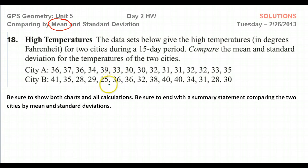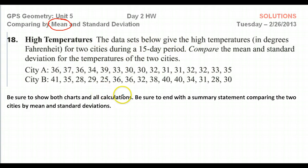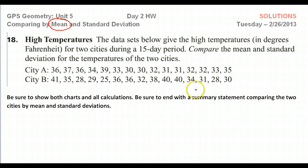We need to consider how consistent the data is — how close the values are to the mean, or how spread out, how much variation there is. In this particular problem, we're talking about temperature. You can imagine one city where the temperatures remain very normalized and don't vary a lot over the months. But then another city has extreme highs and extreme lows. In both cases, the average temperature could be close to the same, but your experience living there will be very different.